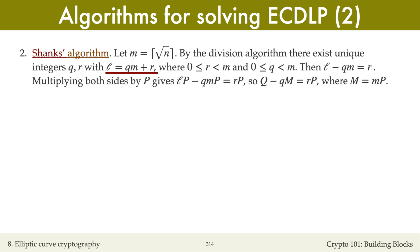Since the unknown discrete logarithm l is less than n, q must also be less than the square root of n, and so q is also between 0 and m minus 1. Shanks' algorithm determines l by first finding the quotient q and the remainder r.